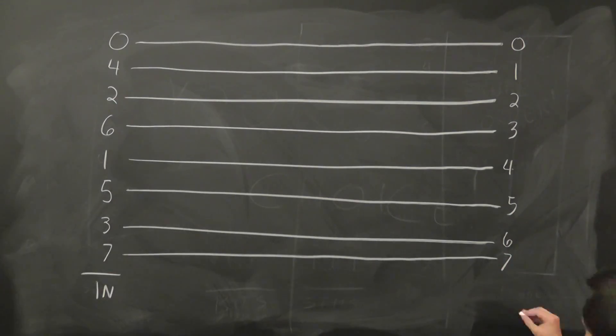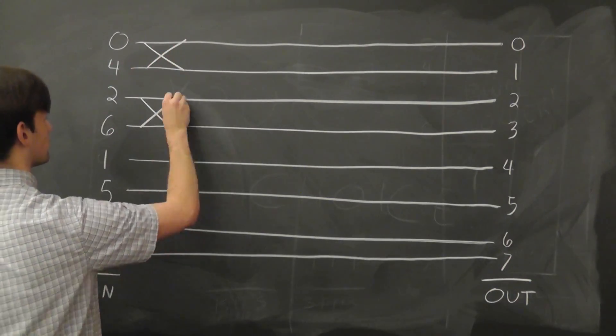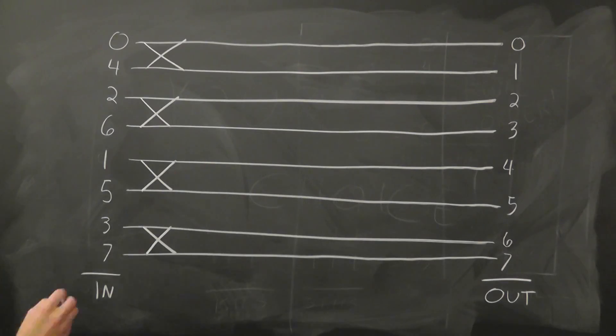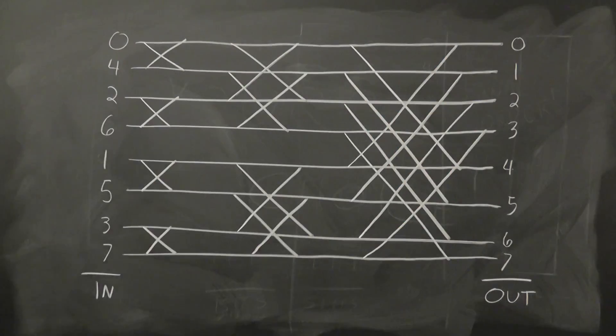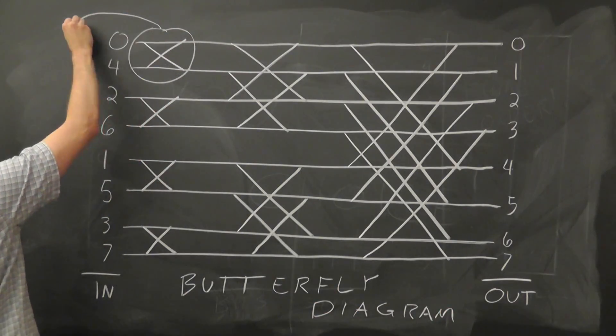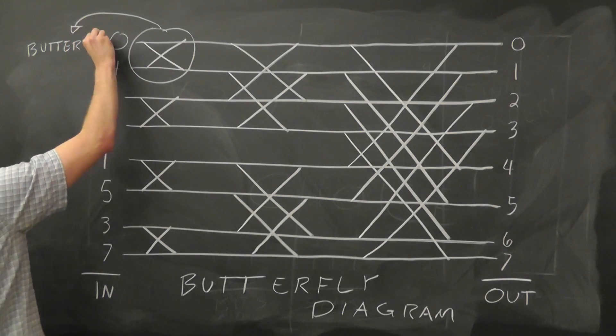The idea is somewhat straightforward. For the first iteration, we combine pairs of elements together. The second iteration, we combine pairs of pairs. And in the third iteration, we combine pairs of pairs of pairs. Each combination is called a butterfly because it looks like an hourglass.